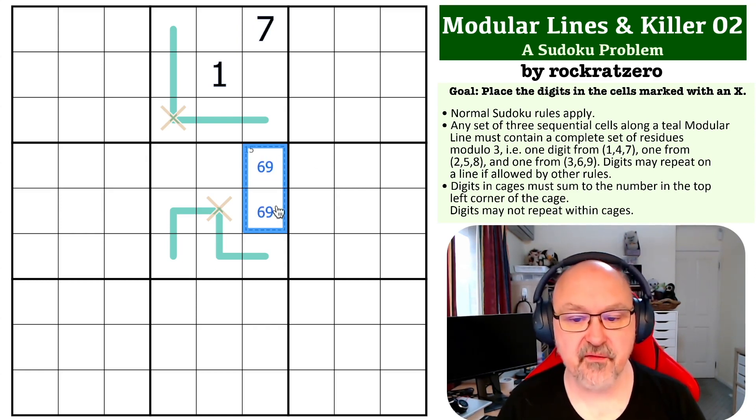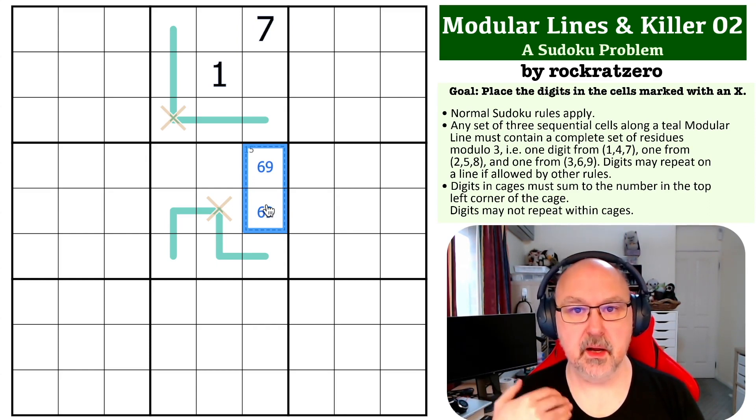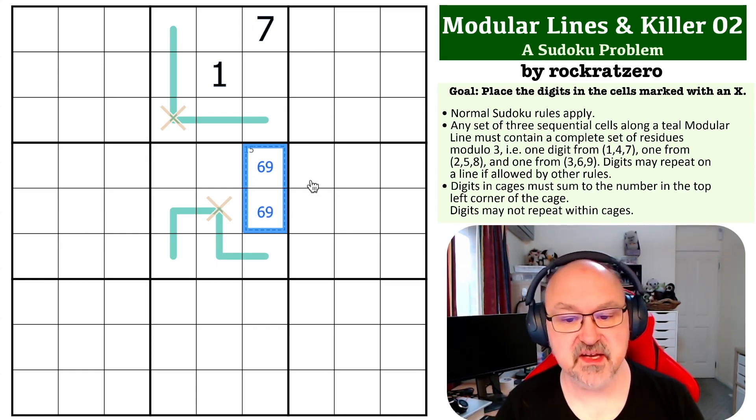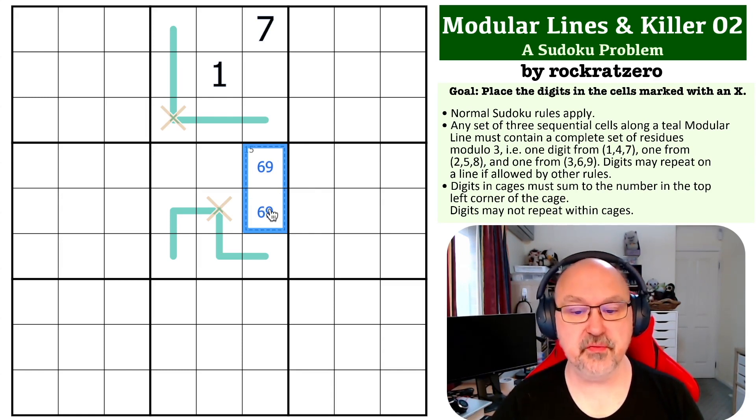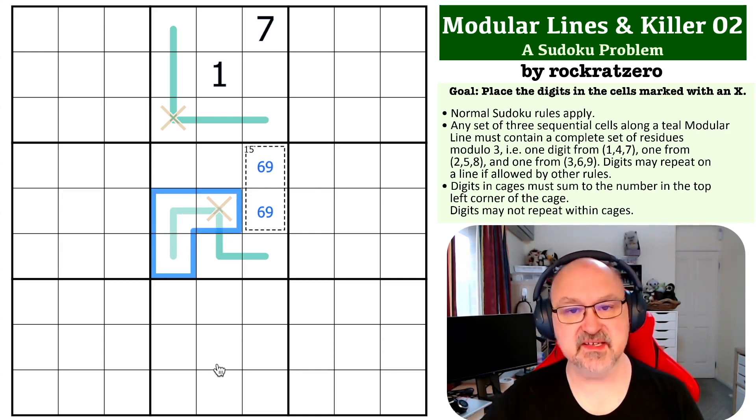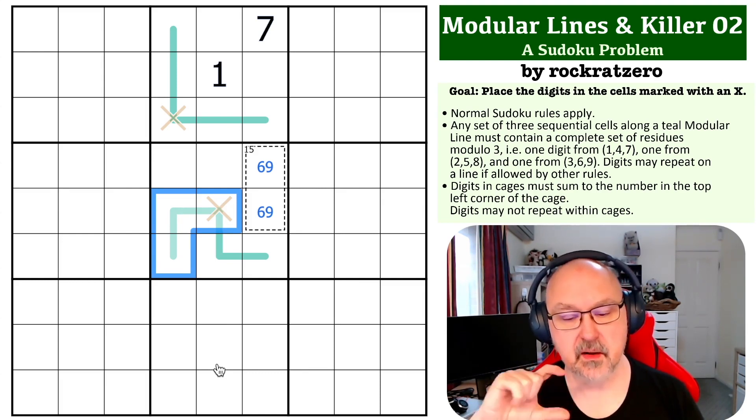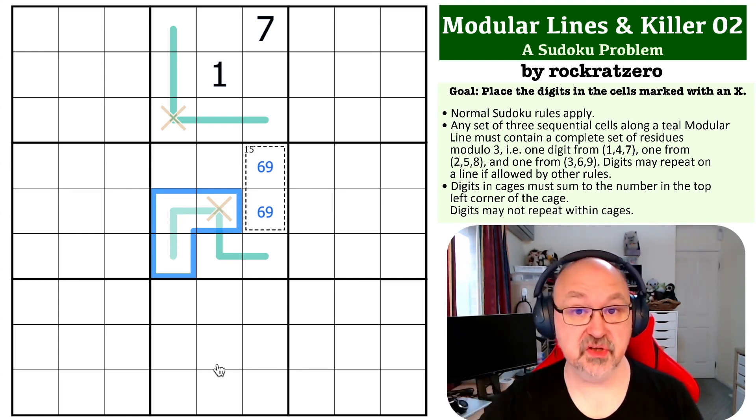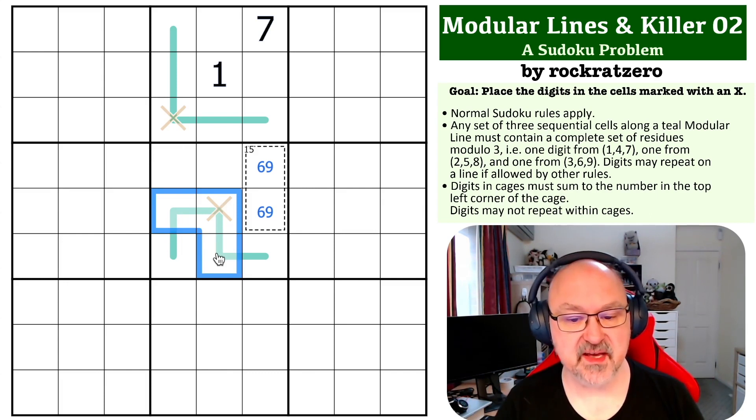Now, 6 and 9 are from the same modulo set - they are from the 369 set. So I've used two of the 369 set. This digit and this digit are three apart on the modulo line. Because these three cells will be a set of the same modulos, and this will be a set, these two have to be the same. Because this will be A, B, and C, and this will be B, C, and therefore have to include A. So these will be the same, and these two will be the same.